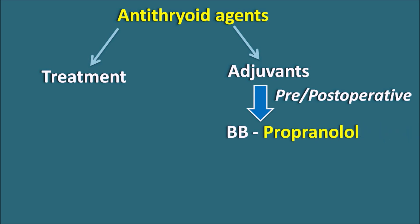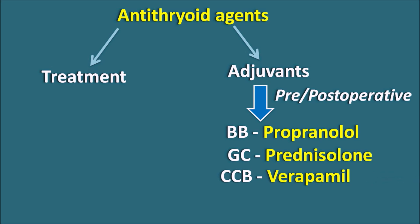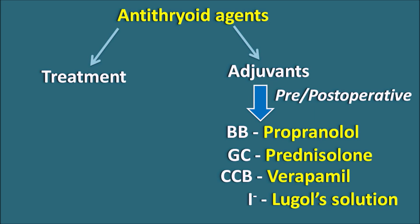We can use beta blockers like propranolol and nadolol, which are non-selective beta blockers that block beta-1 receptors on the cardiac system, thereby preventing cardiac stimulation by thyroid hormones. Similarly, we can use glucocorticoids like prednisolone to control inflammation, and calcium channel blockers like verapamil to control blood pressure. Excess iodide can be given as Lugol's solution to decrease the size of the thyroid gland before surgery, and Lugol's solution can also be used in thyroid storm to reduce excessive symptoms.